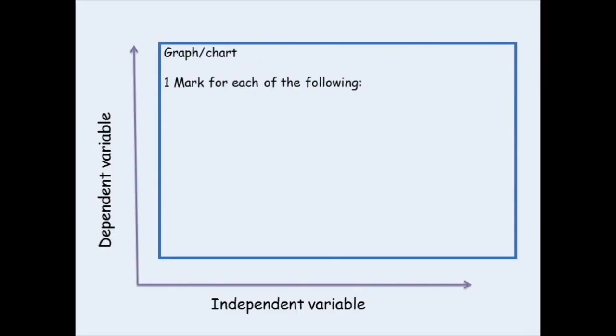So where do examiners award marks for graphs? One mark is given for your x-axis. You need to have drawn a suitable scale, and the axis needs to be labeled with units if appropriate.